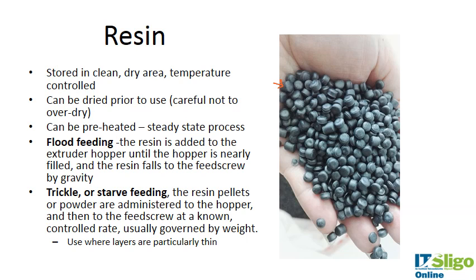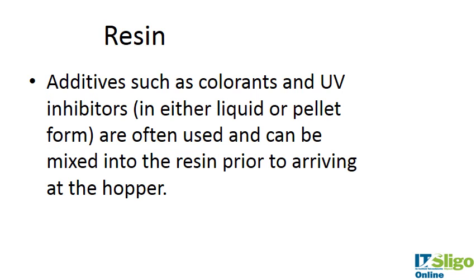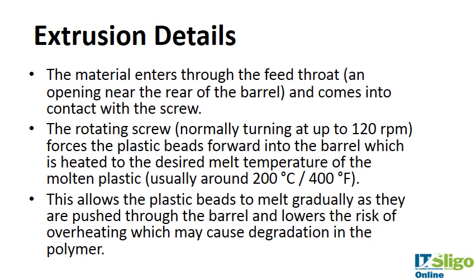The plastic resin is fed into the feed hopper and stored in a clean, dry, temperature-controlled area. It can be dried prior to use — being careful not to over-dry — and can be preheated. In flood feeding, the resin is added until the hopper is nearly filled and falls to the feed screw by gravity. In trickle or star feeding, the resin pellets are administered at a known controlled rate governed by weight, which is used where layers are particularly thin. The resin can have additives such as colorants and UV inhibitors, mixed in prior to arriving at the hopper. Colorants are common in medical devices to differentiate one device from another.